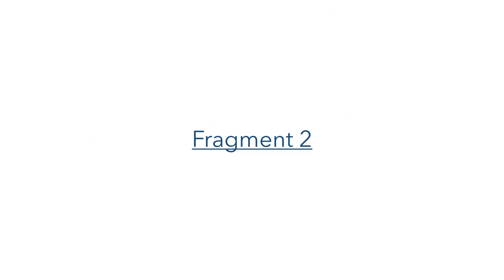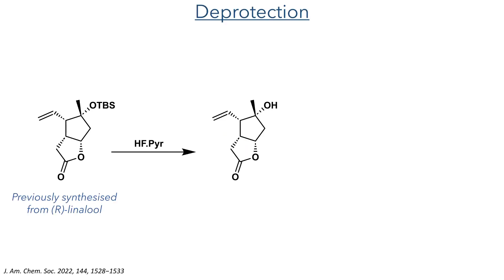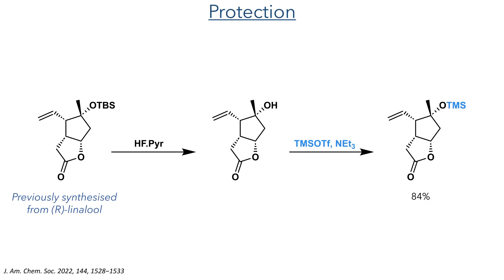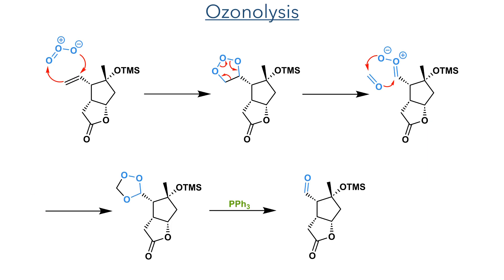With R-norcarvone now complete, they then synthesized the other partner required for the Mukaiyama-Michael addition. To do this, they utilized an intermediate from the previous synthesis of Scabralide A, which was synthesized from R-linalool. This was deprotected using HF and pyridine, and then the hydroxyl group was reprotected using TMS triflate. This was taken forward to an ozonolysis reaction.